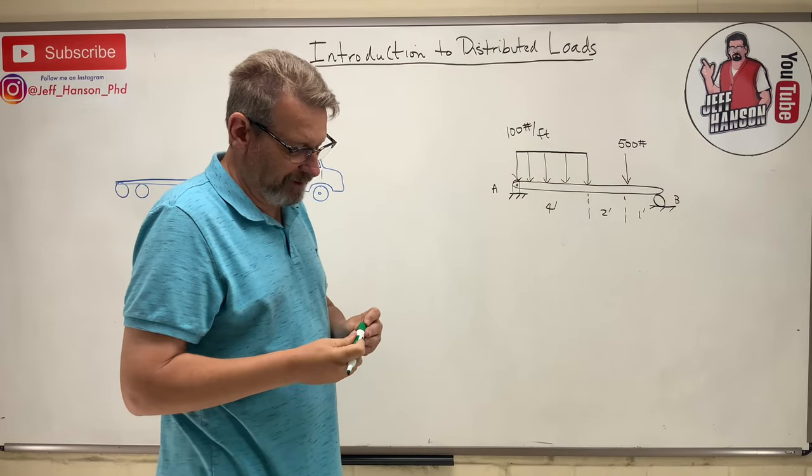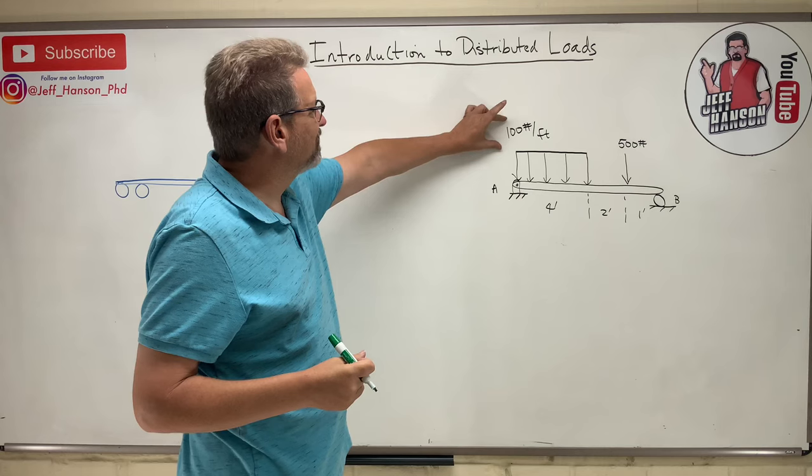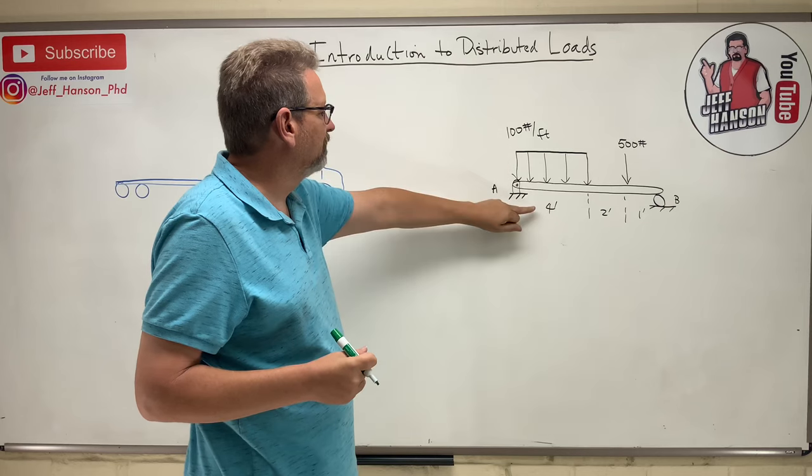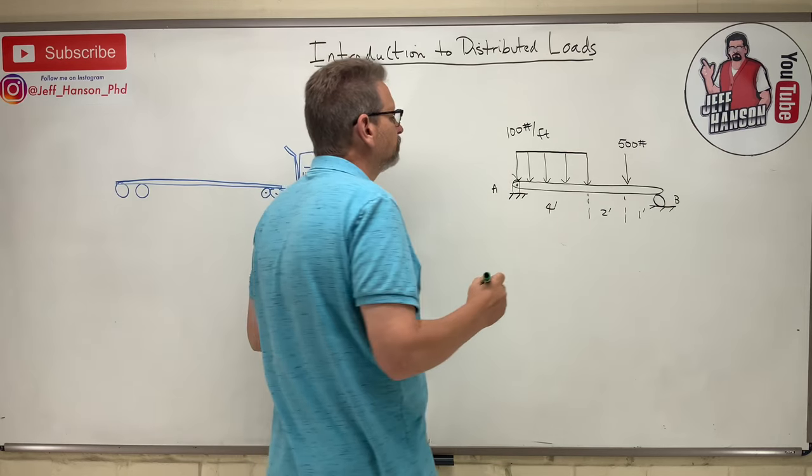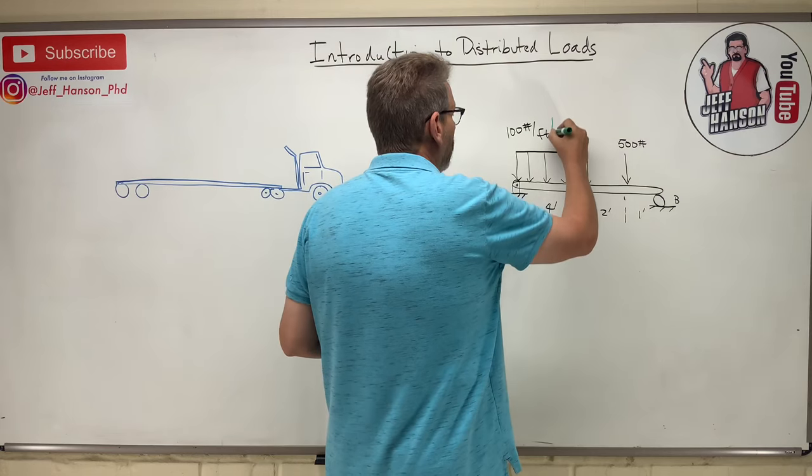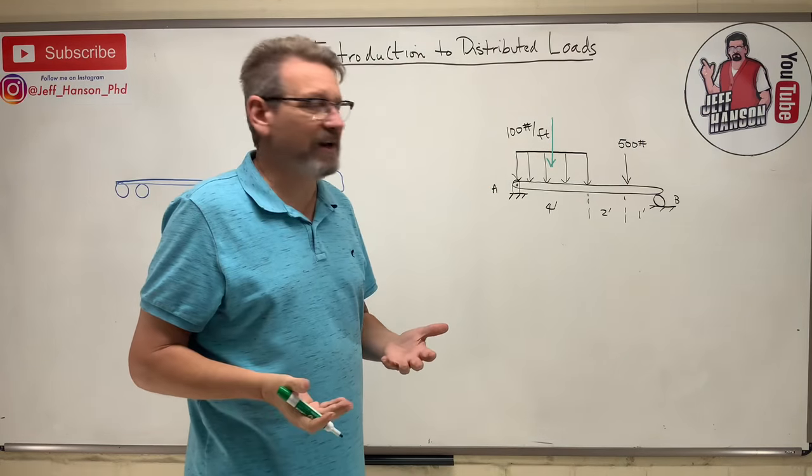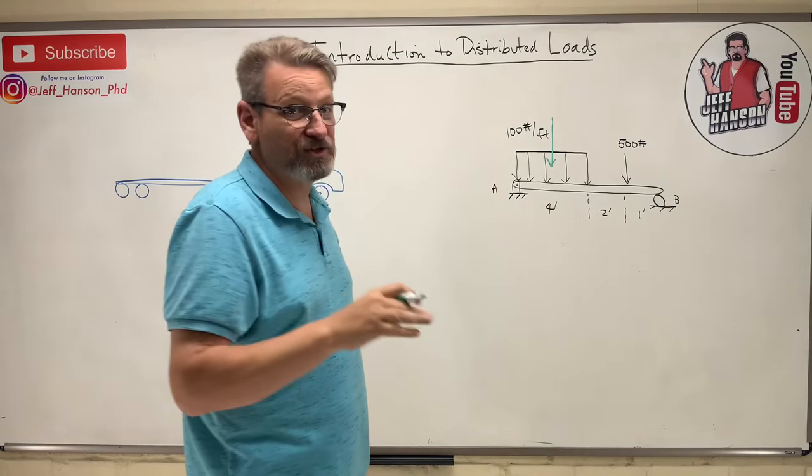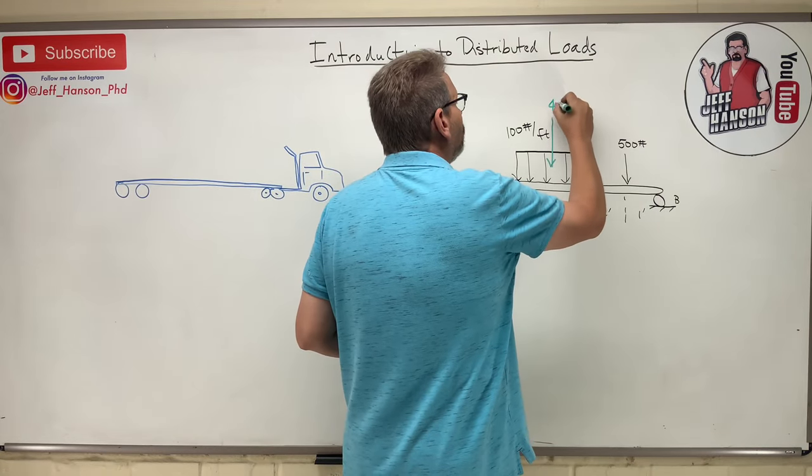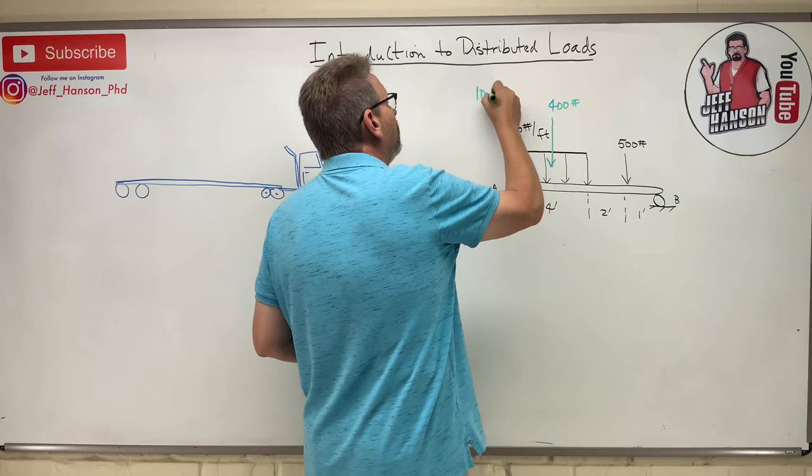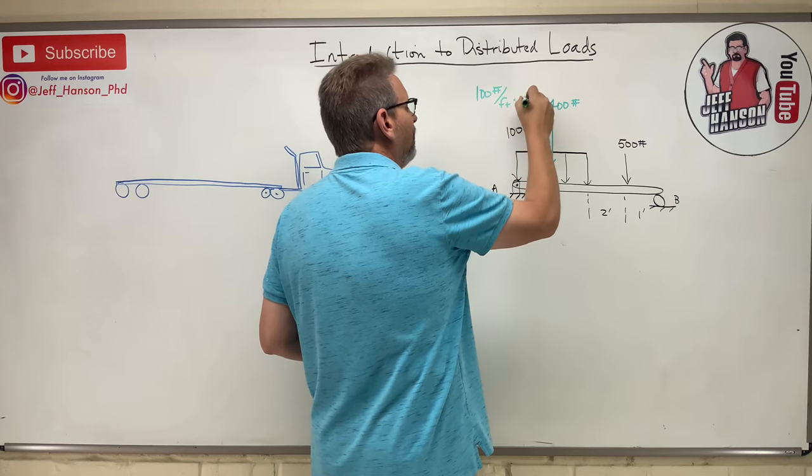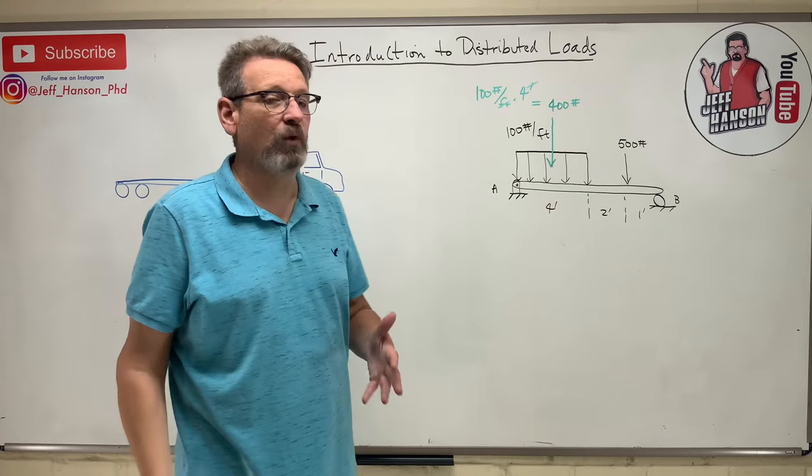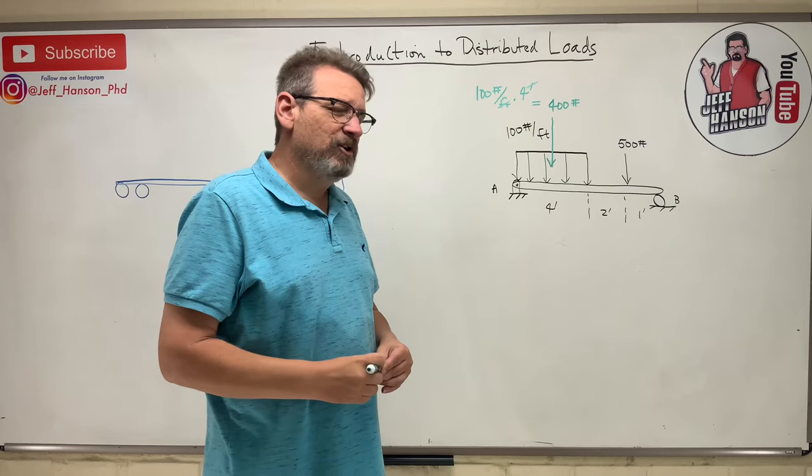And so it would go something like this. You would calculate the size of the distributed load by looking at how much of it you have. So it's 100 pounds per feet over four feet. So that would be 400 pounds. And where do you apply that? What we're doing here is we're converting a distributed load into a concentrated load just to simplify things so that we can solve it as a regular old statics problem. So that would be 400 pounds, right? So you do 100 pounds per feet times four feet, right? The feet cancel out and I'm left with just pounds. So that's where that comes from. And then where do you apply it? At the center.